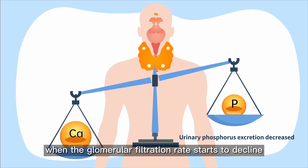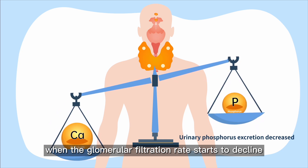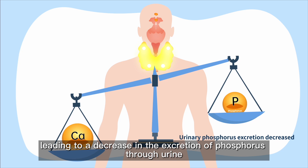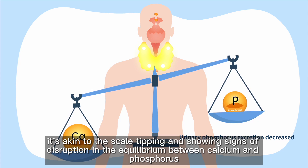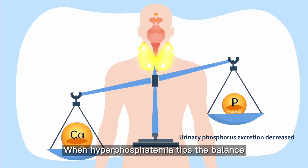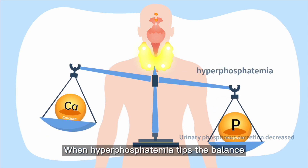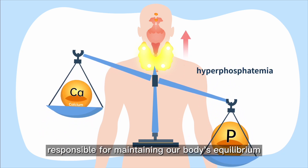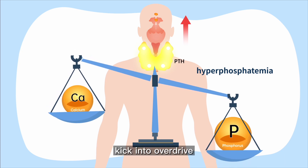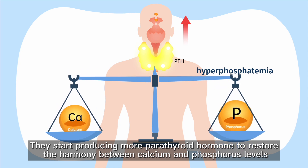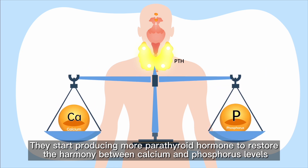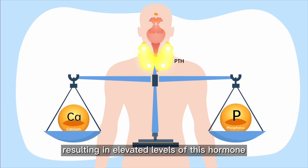However, when the glomerular filtration rate starts to decline, leading to a decrease in the excretion of phosphorus through urine, it's akin to the scale tipping and showing signs of disruption in the equilibrium between calcium and phosphorus. When hyperphosphatemia tips the balance, the parathyroid glands, responsible for maintaining our body's equilibrium, kick into overdrive. They start producing more parathyroid hormone to restore the harmony between calcium and phosphorus levels, resulting in elevated levels of this hormone.